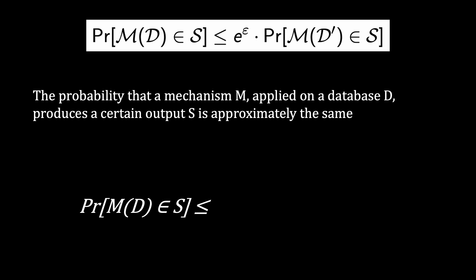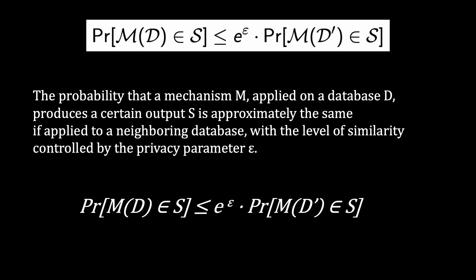With the level of similarity controlled by the privacy parameter epsilon, and this is e to the power of epsilon. This way it's a bit easier to calculate the epsilon because we can just use the logarithm.